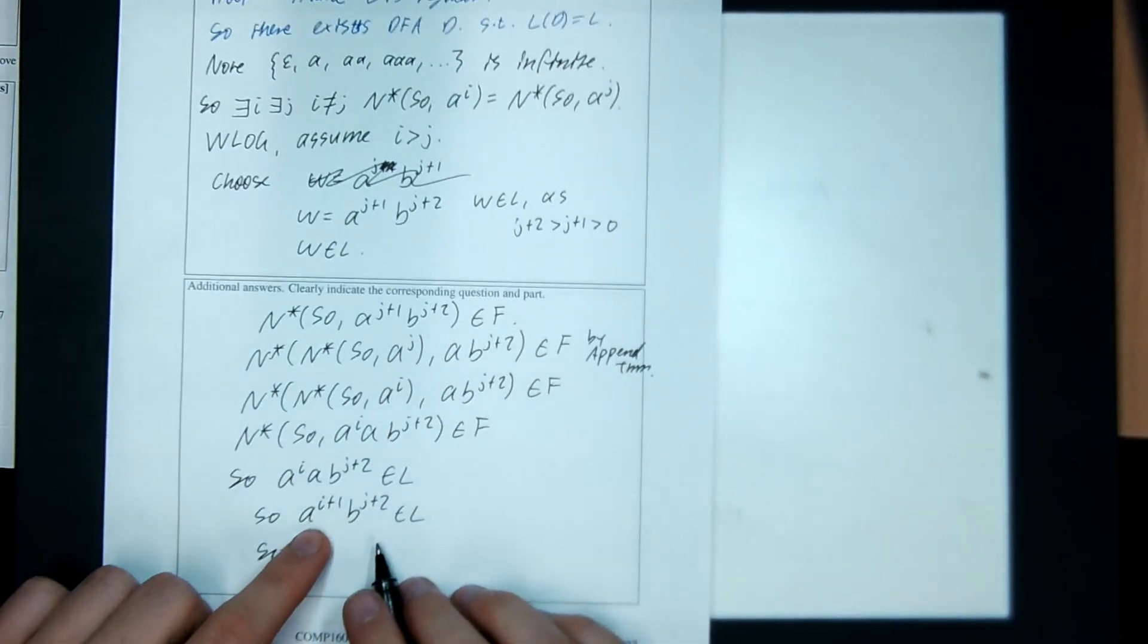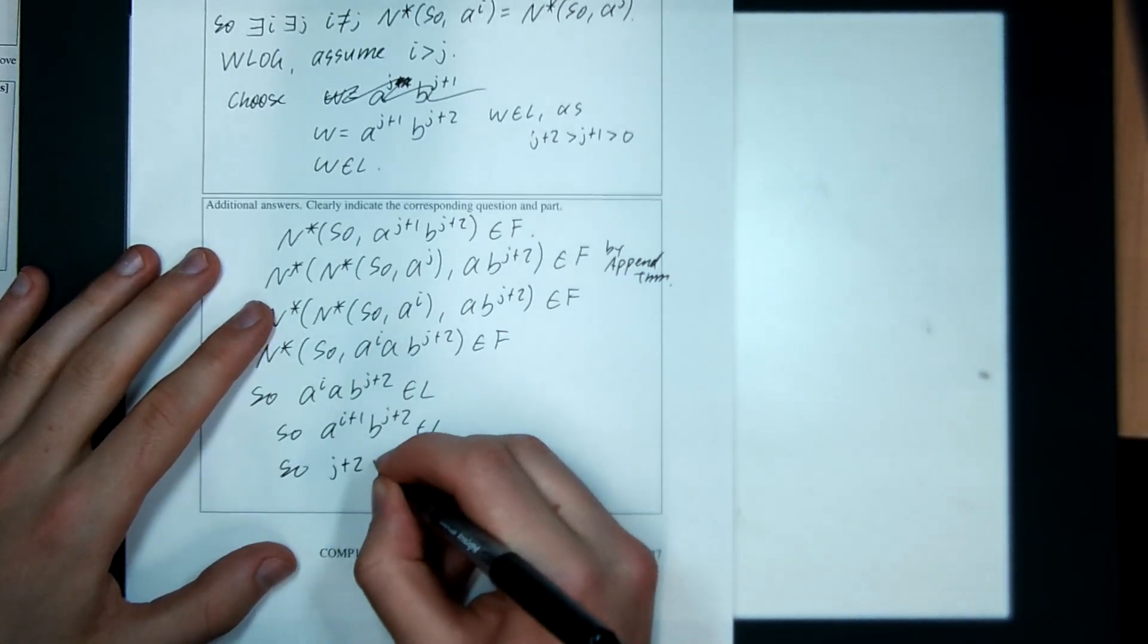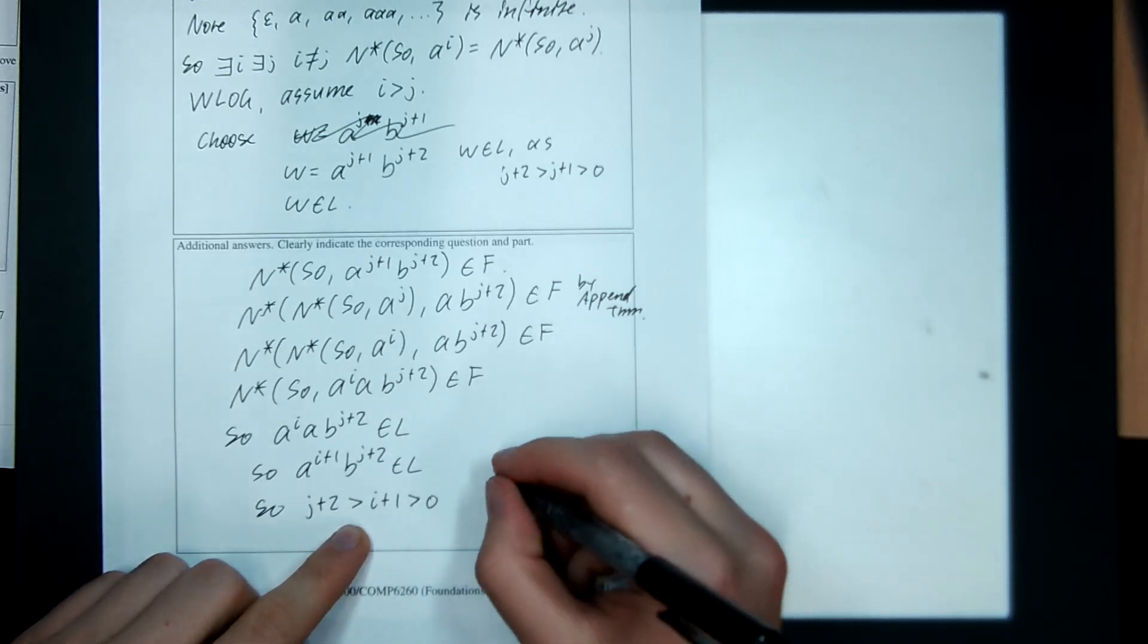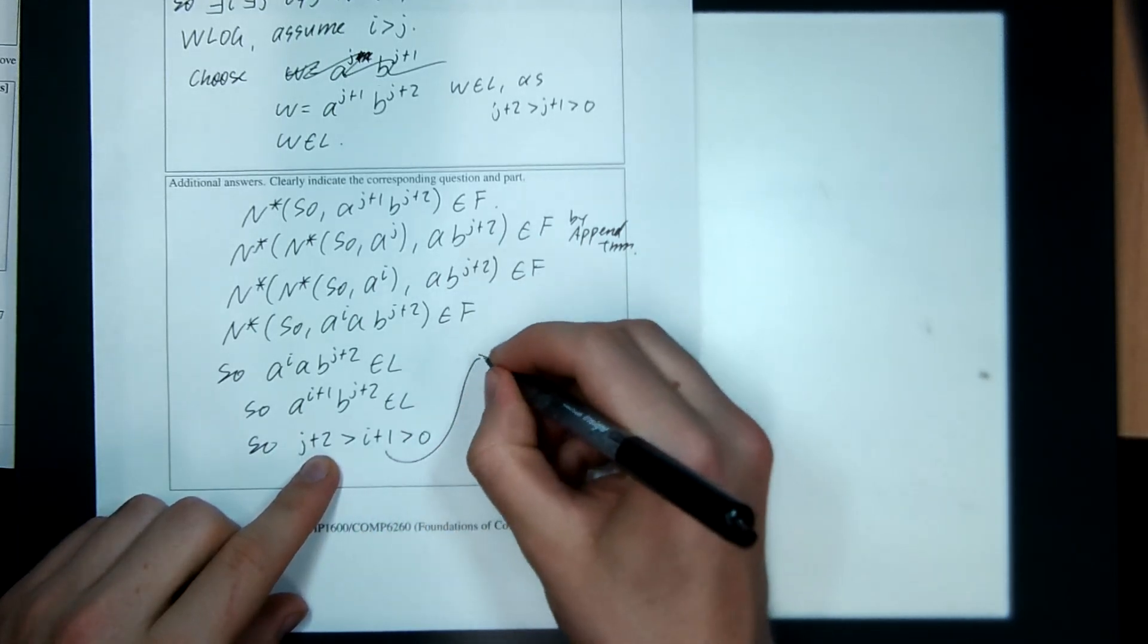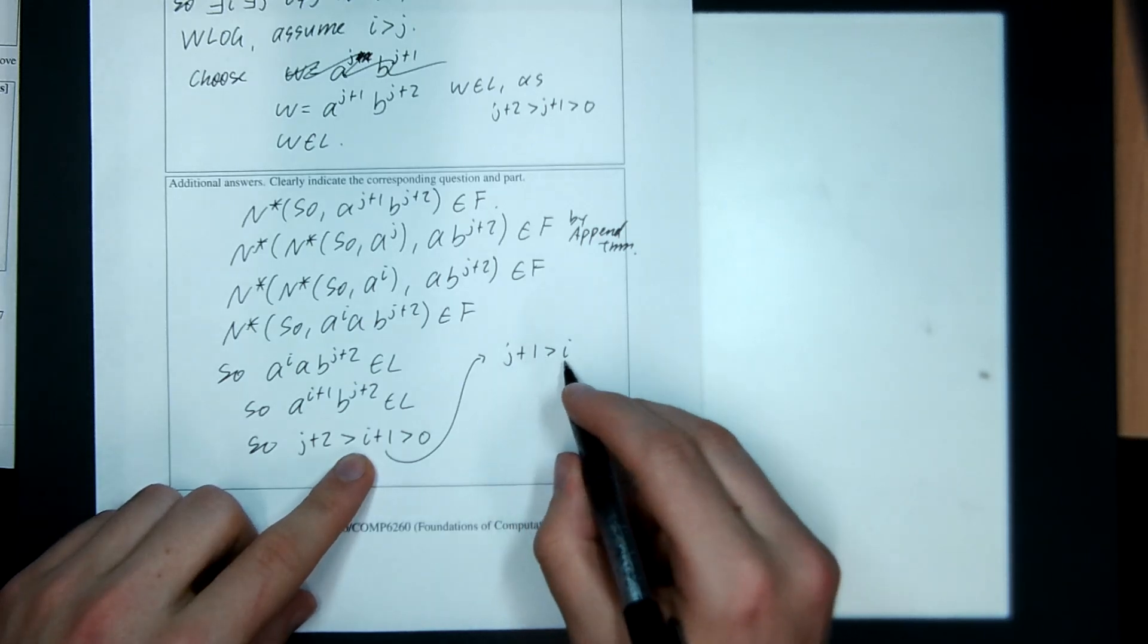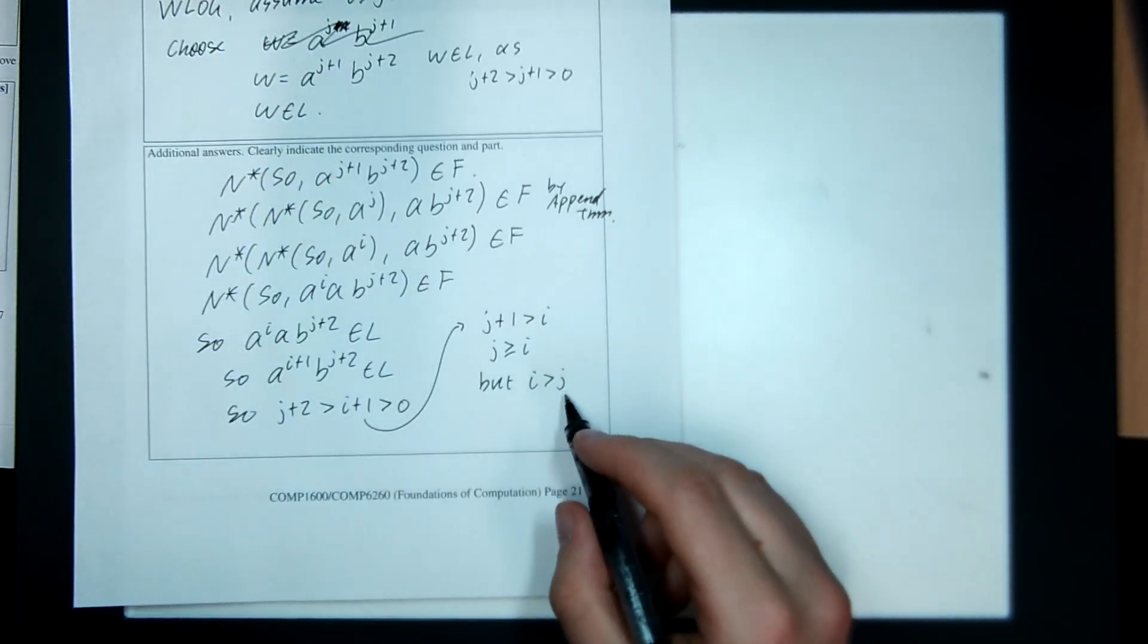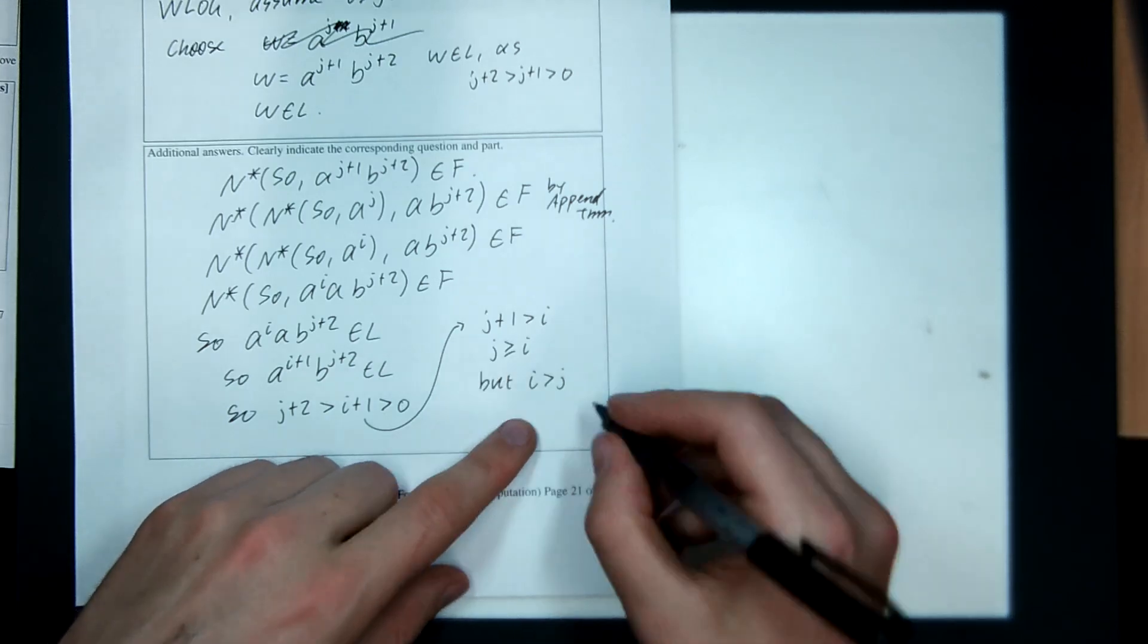So if it's in the language, it's got to satisfy this property. There's got to be strictly more B's than A's. So that means J plus 2 is bigger than I plus 1 is bigger than 0. So I've got this property here. I've got that I is bigger than J. Can I cook up a contradiction? Maybe. So if J plus 2 is bigger than I plus 1, that means J plus 1 is bigger than I. And if J plus 1 is bigger than I, that means J is bigger than or equal to I, but I was bigger than J. If I is bigger than J, that means it's false to say J is bigger than or equal to I. So there's the contradiction. There we go.